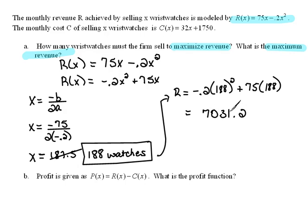Now, here again, this is an application problem, so it has to make sense. This is revenue, money. Money should be into two decimal places because of it being dollars and cents. So I'm going to put a 0 at the end, so we see 7031.20. This would be our maximum revenue.